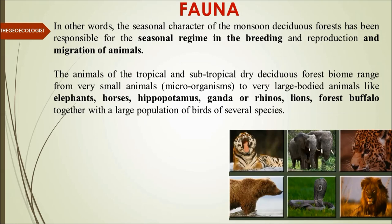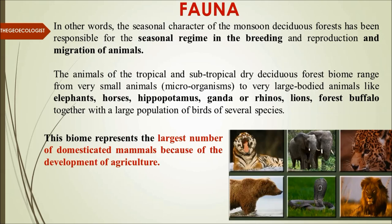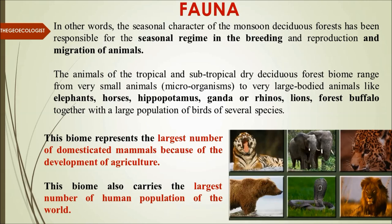Animals of this tropical and subtropical dry deciduous biome range from very small microorganisms to large-bodied animals such as elephants, horses, hippopotamus, rhinos, lions, and forest buffalos, along with many bird species. Notably, this biome has the largest number of domesticated mammals because of agrarian development — alongside the forest, agricultural development takes place even within the forests. This biome also carries the largest human population, with maximum forest dwelling occurring here, unlike in the evergreen forest.